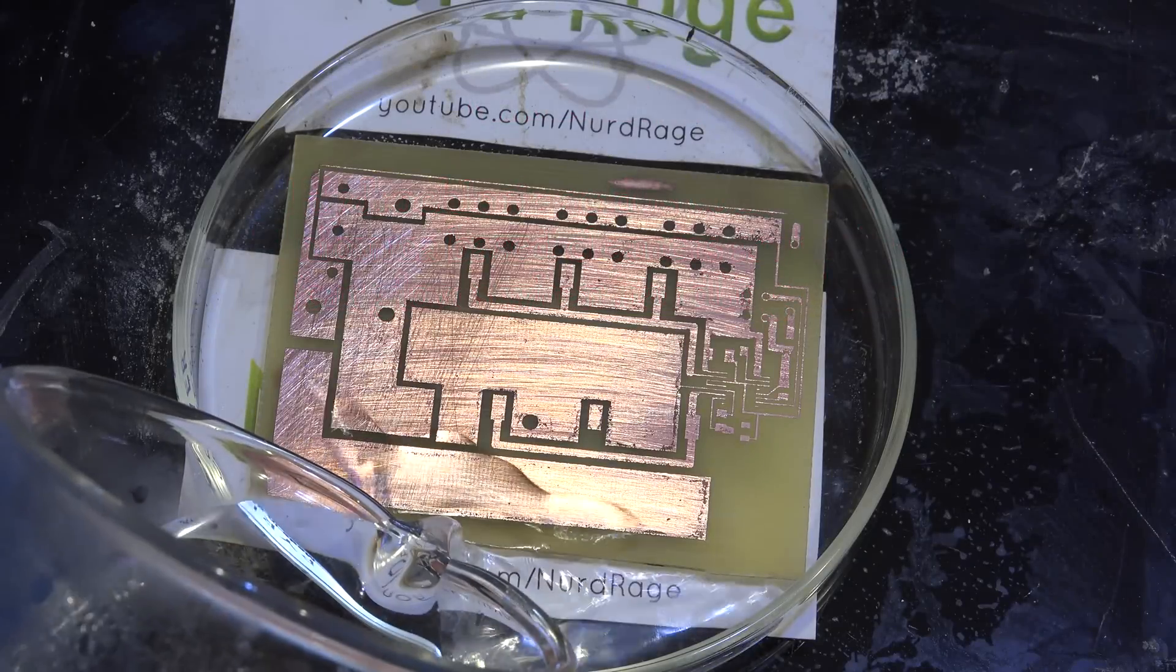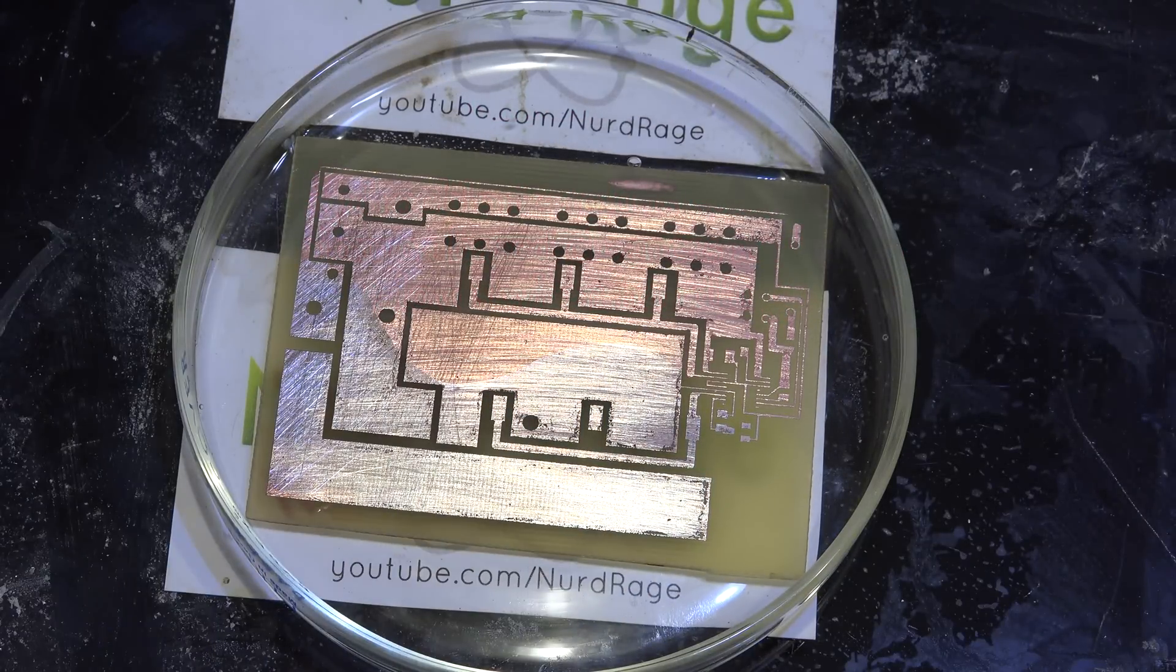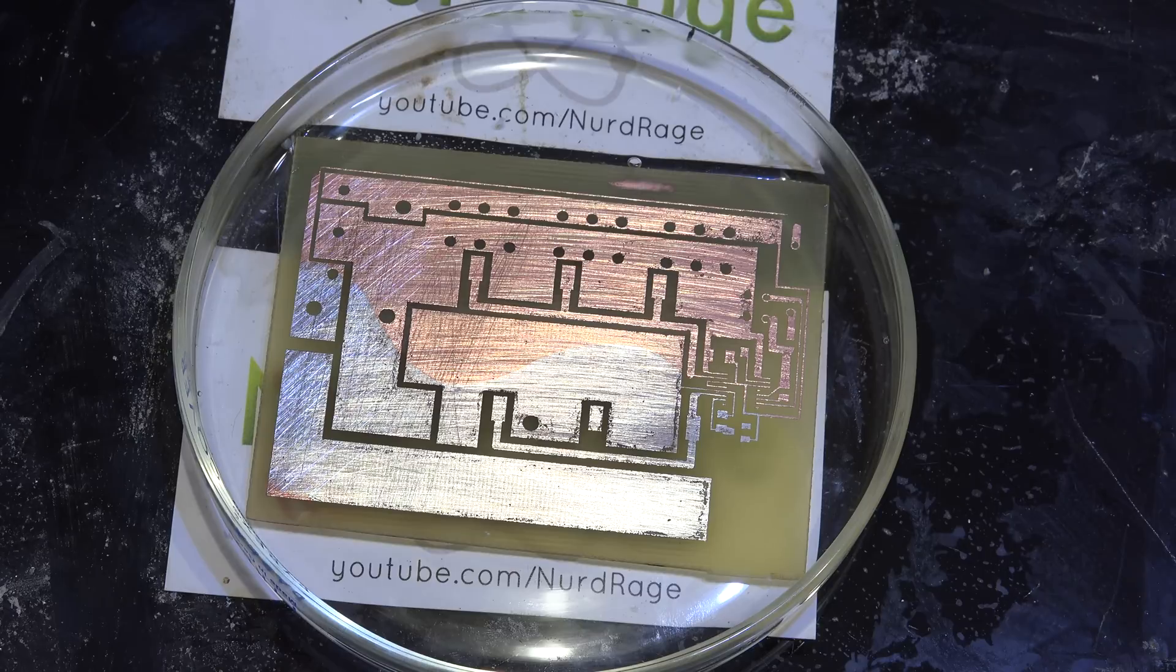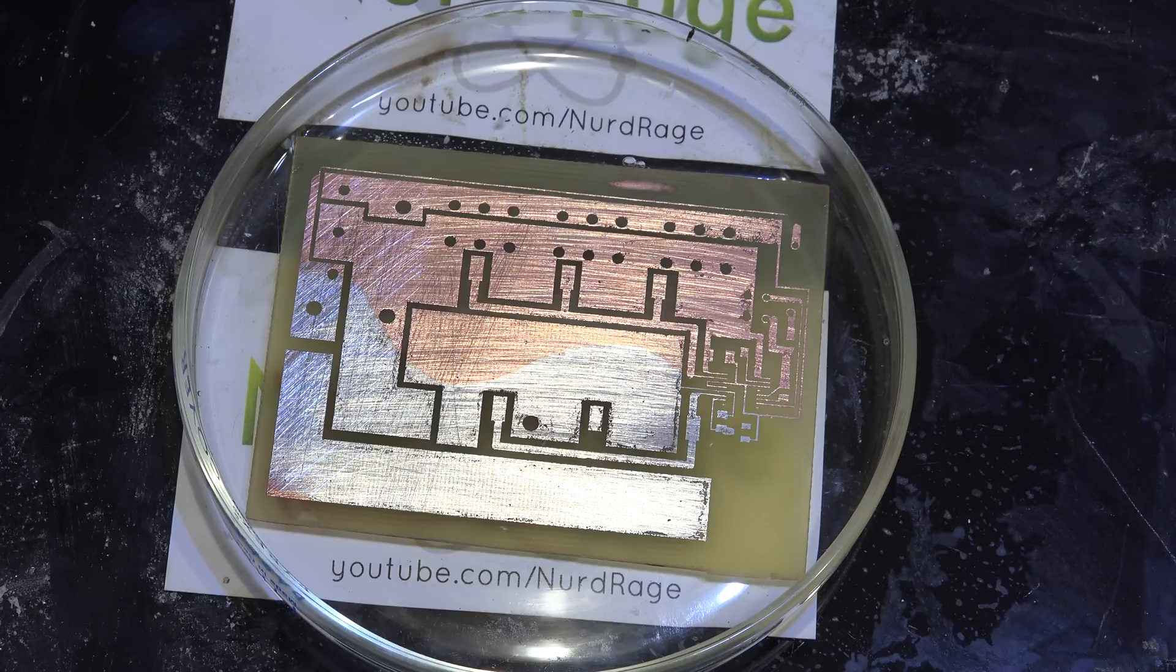Greetings fellow nerds. A number of electrical engineers have asked me to explore the chemistry of printed circuit board tinning solutions. When immersed in these solutions, copper metal will get a coating of tin metal.